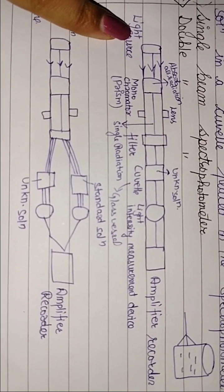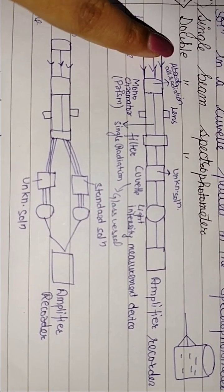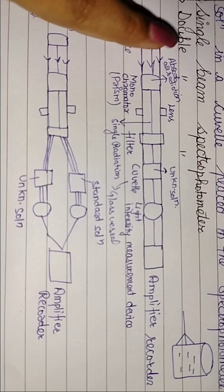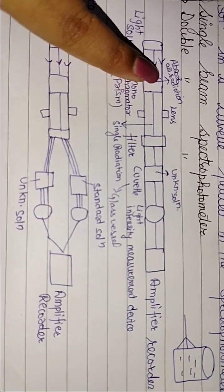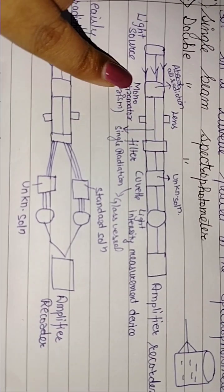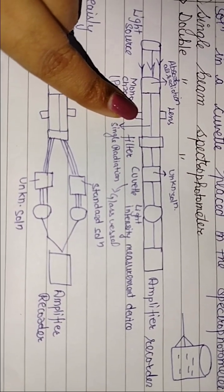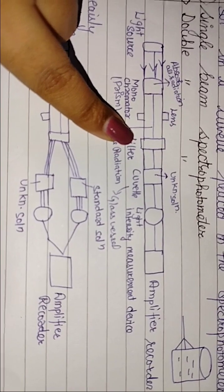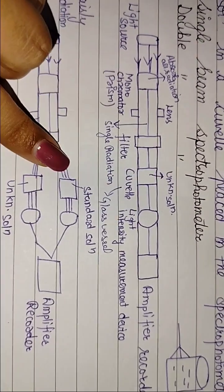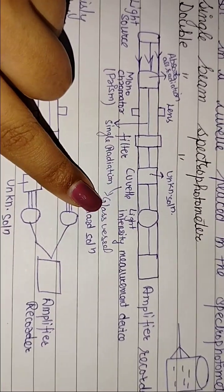Now the light source will pass every radiation. What is a monochromator? It will convert every radiation to single beam. So it will absorb every radiation, but single radiation will pass through. Now we will pass through the lens and filter through the single radiation. In the cuvet, we have unknown solution. Cuvet is also known as glass vessel.